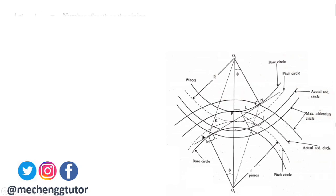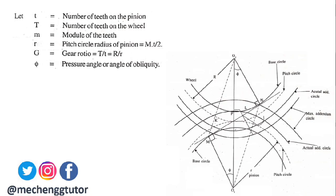Let small t be the number of teeth on the pinion, capital T be the number of teeth on the wheel, m be the module of the teeth, and r be the pitch circle radius of the pinion, so r = mt/2. Let g be the gear ratio, that is capital T divided by t, or equivalently R divided by r. Let φ be the pressure angle or angle of obliquity. We have two triangles: O1PN and O2PM.